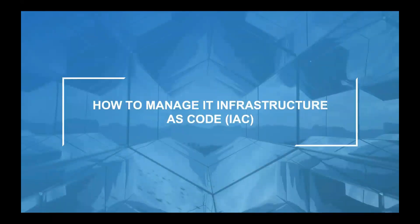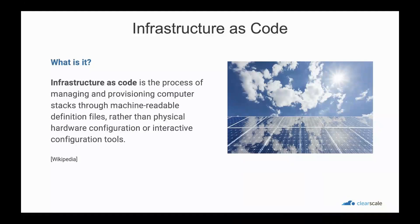So how do we manage IT infrastructure as code? Infrastructure as code is the process of managing and provisioning computer stacks through machine-readable definition files rather than physical hardware configurations or interactive configuration tools. I will refer to infrastructure as code as IaC for short. IaC has emerged as a best practice for automating the provisioning of infrastructure services.